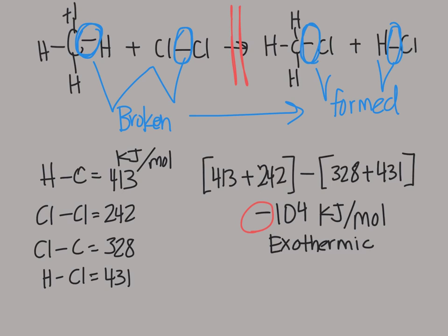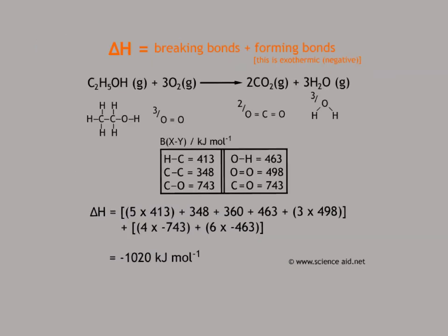Another thing to keep in mind: if we have two of this entire molecule and wanted to break both of the bonds, we would have to multiply by whatever factor of the coefficients. I'm showing you this second problem for two reasons. First, they approach this problem by taking apart every single bond on the left side and then putting together every single bond on the right — a very easy way not to miss anything. Also, I noticed their number is incorrect here; there should be 360. I'm going to move that correction to the side so it doesn't interfere.